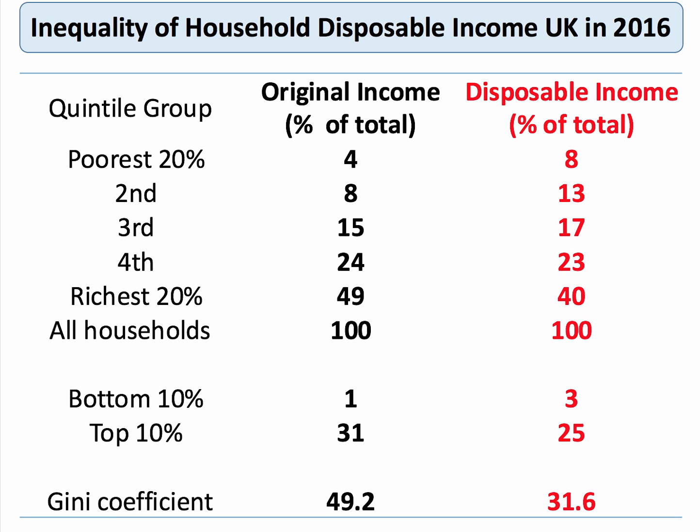If we look at disposable income — income after direct taxes have been paid and welfare benefits have been distributed — then we see income inequality is less skewed, less severe. The poorest fifth take home 8% of disposable income, the next 20% take 13%, and so on. In fact, the bottom 60% now have 38% of disposable income. The top fifth goes down from 49% to 40%, and the top 10% still have one quarter of all disposable income.